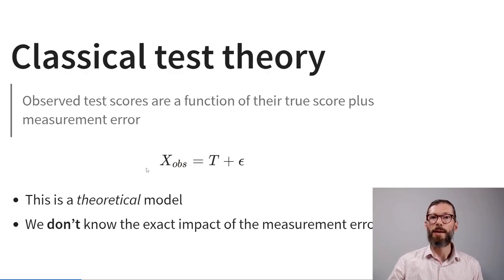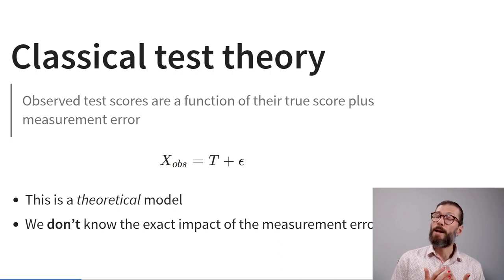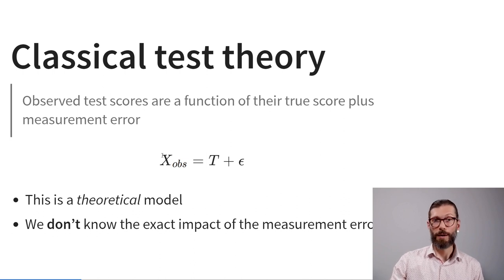These are the basic principles of classical test theory, which assumes that observed test scores are a function of an underlying true score plus measurement error. People's observed responses to these items are a function of their true score on extroversion and some measurement error specific to the individual and that indicator. This is a theoretical model — in reality, we often don't know the exact impact of measurement error.